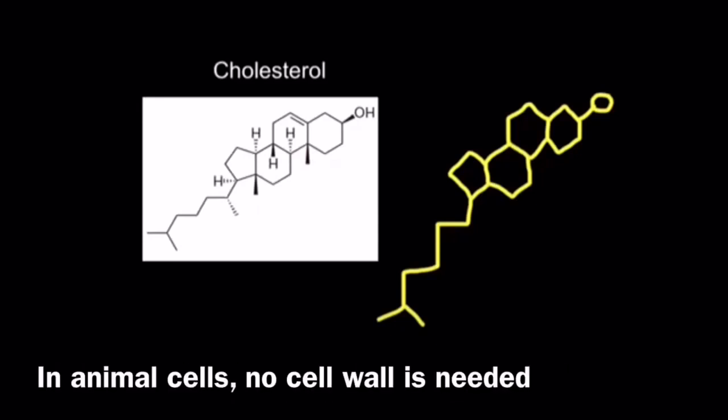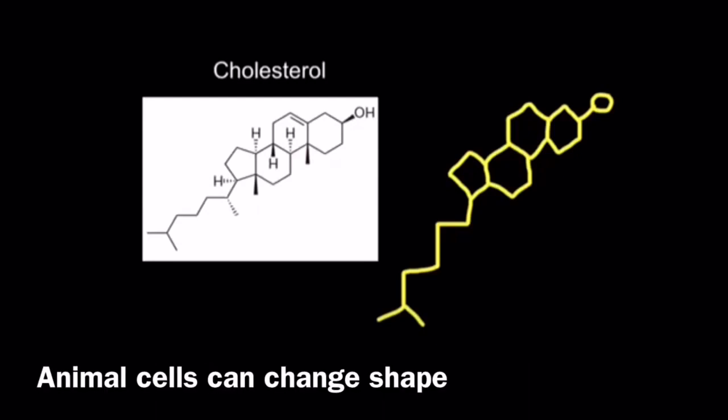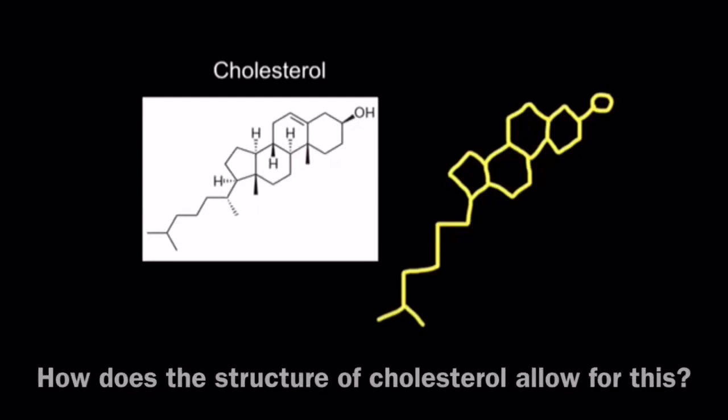This means that animal cells do not need a cell wall to protect their cell membrane and it also means that animal cells can change shape. To explore how cholesterol allows for this to happen within the cell membrane, let's first take a look at its structure.